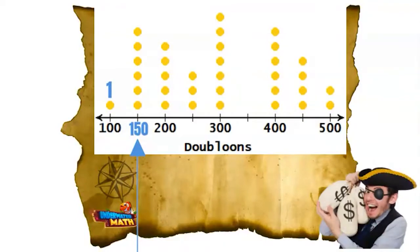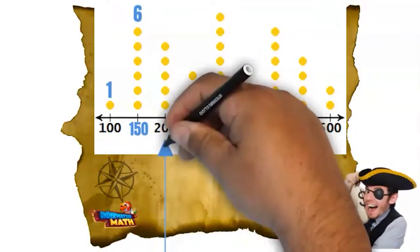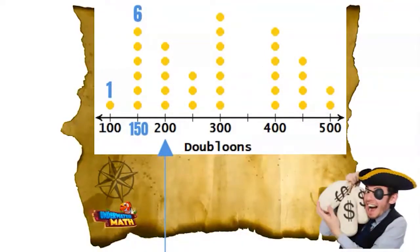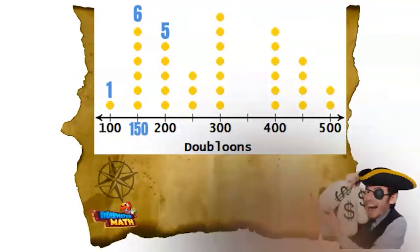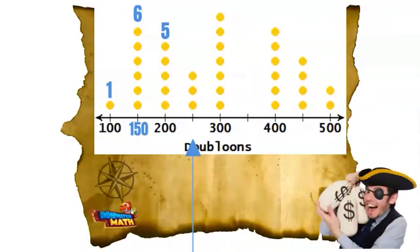There are six dots above the 150 tick mark, which means six of my buried treasures had 150 doubloons. There are five dots above the 200 tick mark, which means five of my buried treasures had 200 doubloons.